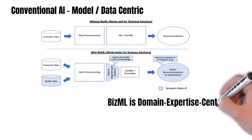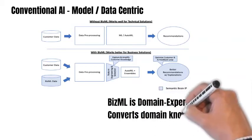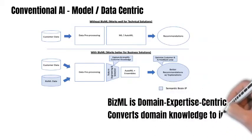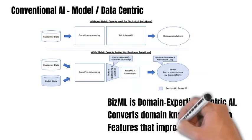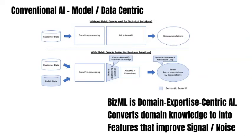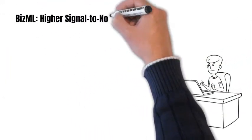BizML essentially uses domain expertise to the maximum possible to derive features that significantly improve signal-to-noise ratio. How does BizML's higher signal-to-noise ratio impact our performance?